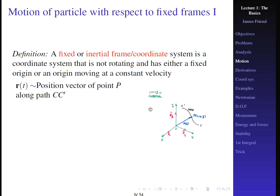Let's talk about how a particle moves with respect to fixed frames. A fixed or inertial frame coordinate system is one that is not rotating and either has a fixed origin or an origin moving at constant velocity. We'll say OXYZ (capital letters) is a fixed or inertial frame. We define the position vector R from the origin O to a particular point P.